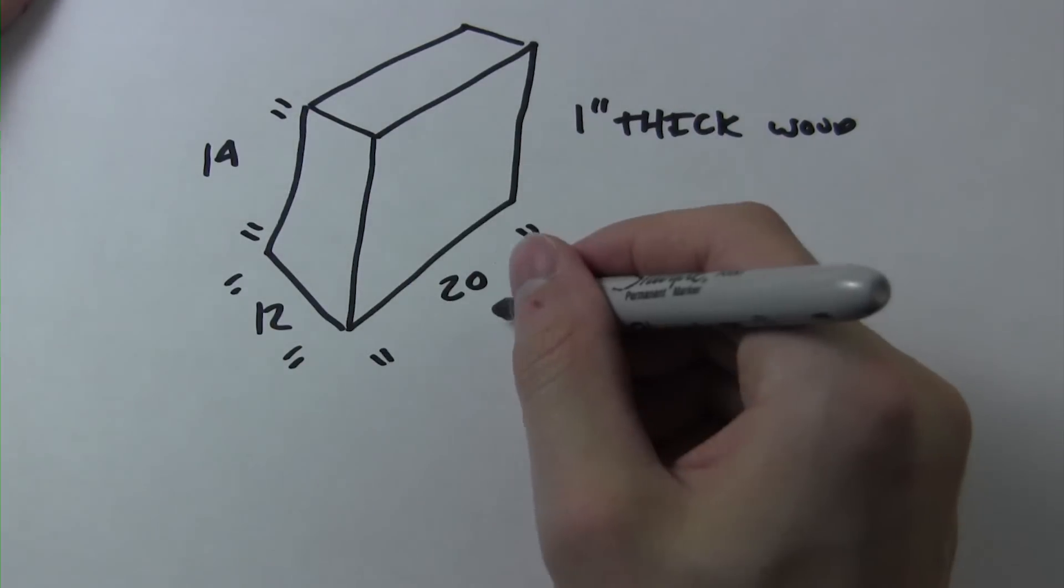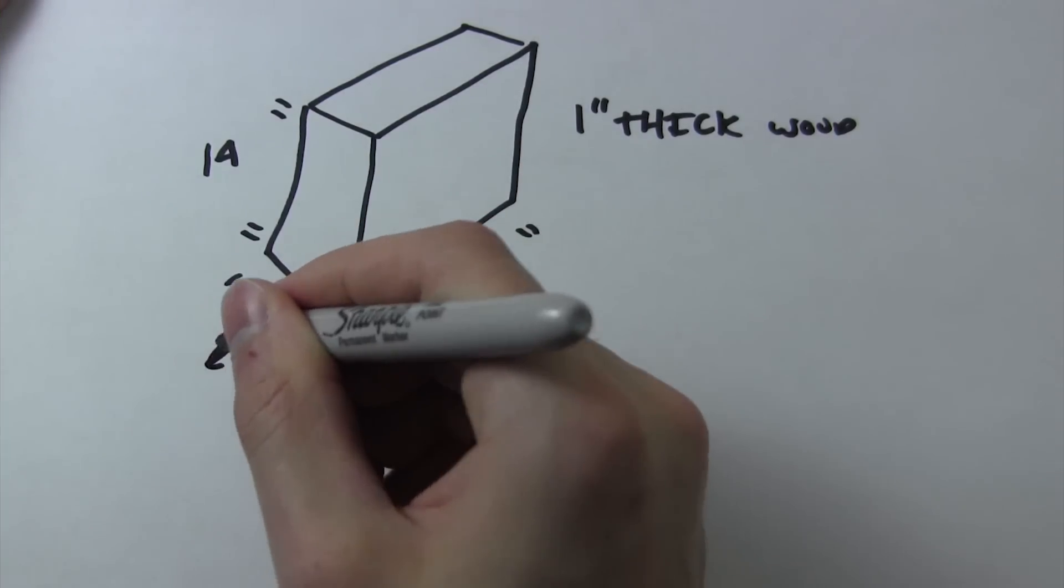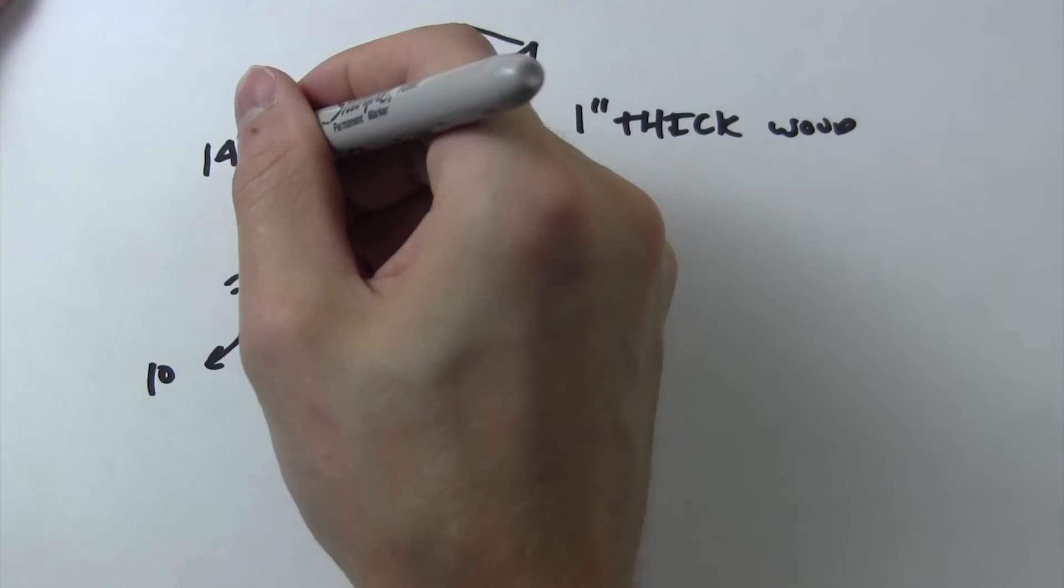We simply subtract 2 inches from each dimension, 1 inch for each side of the wooden box. And we come up with 12 inches by 10 inches by 18 inches.